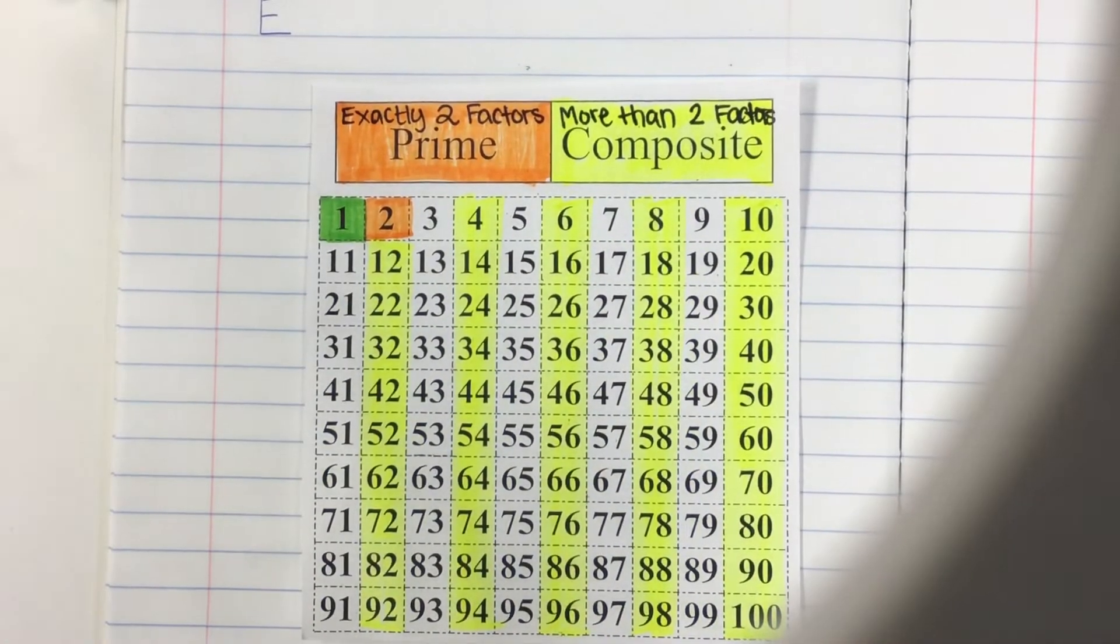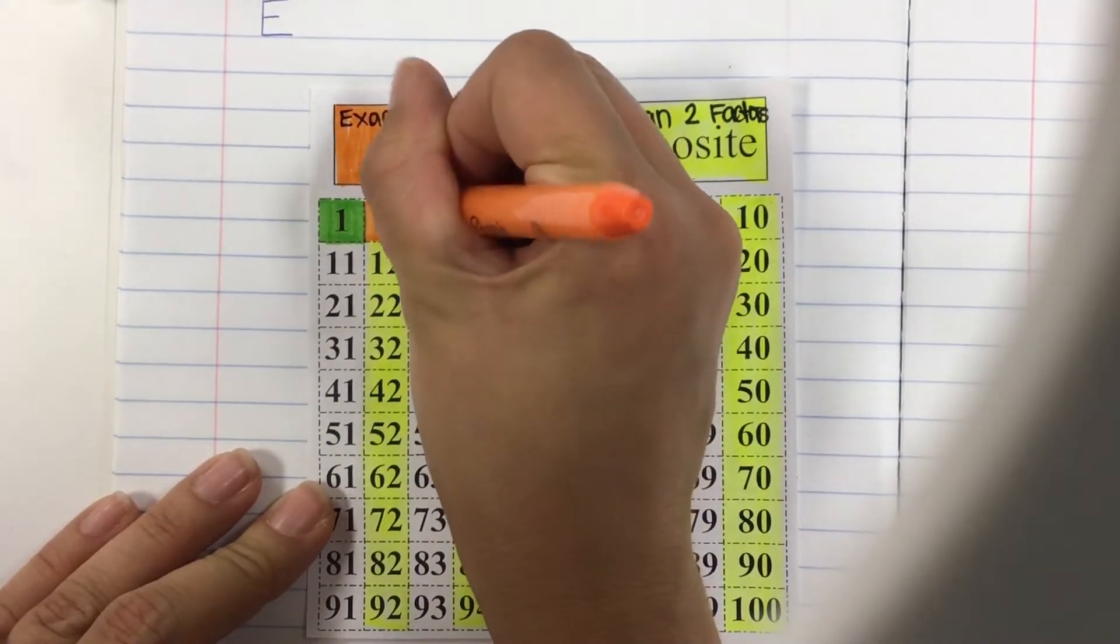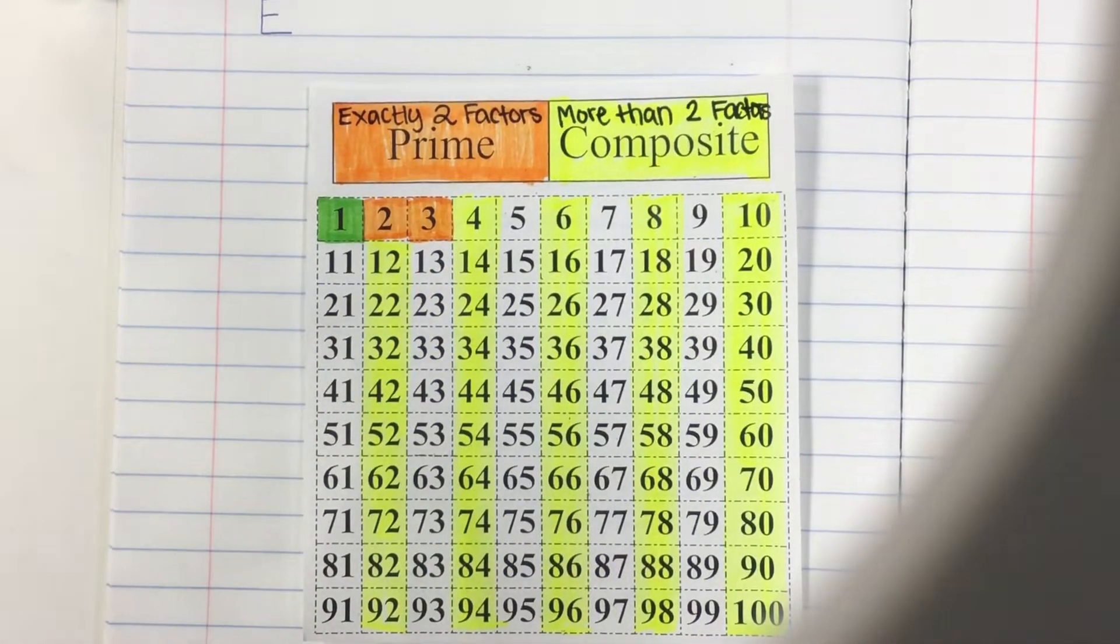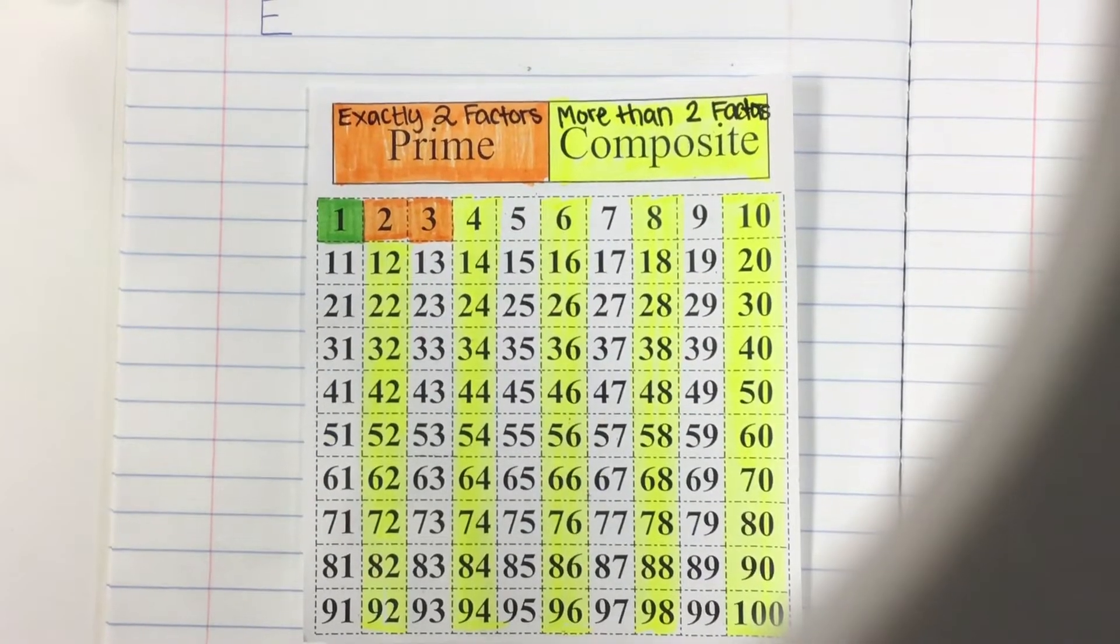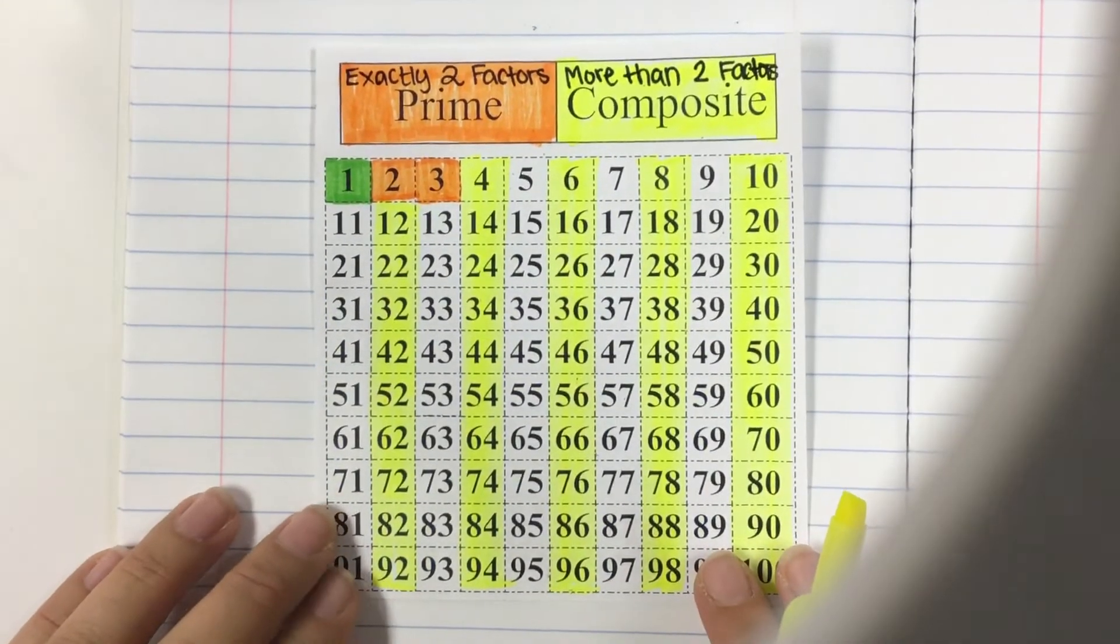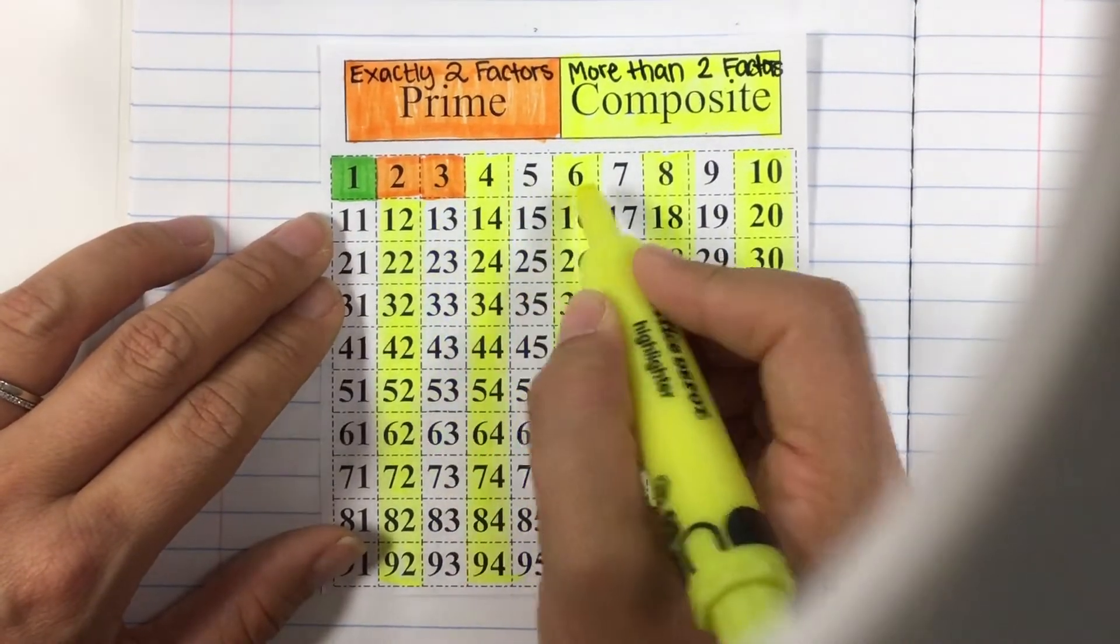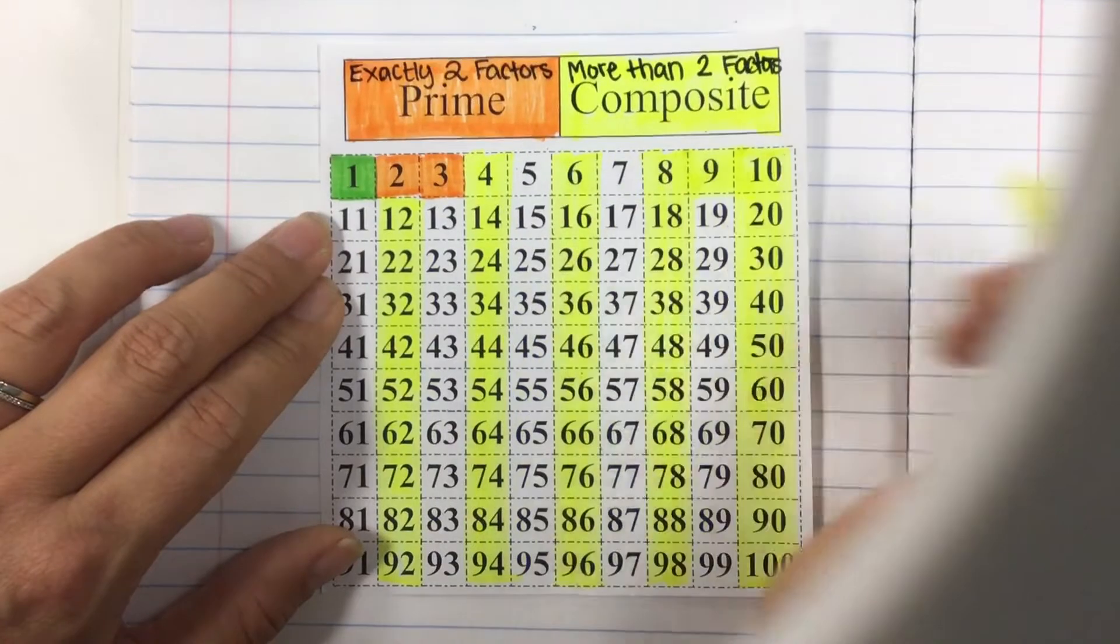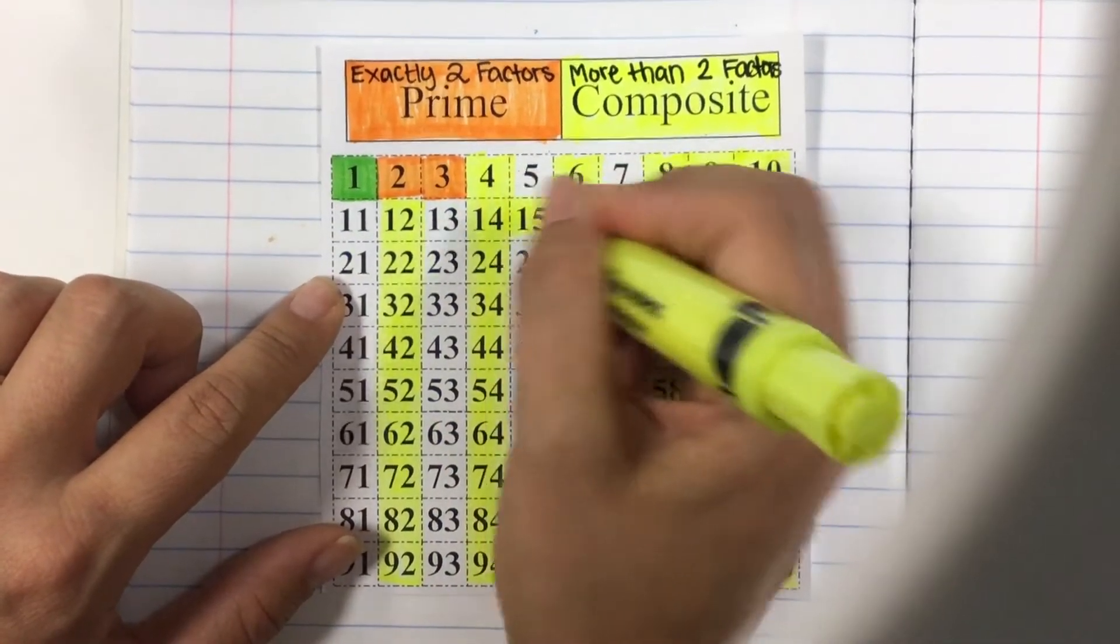So that means the next number is also prime, 3. Go ahead and grab your prime color and highlight 3. Then that means we need to highlight in our composite color the numbers that are multiples of 3. So we can really just count by 3's if you wanted to. 9 is not highlighted yet so we need to go ahead and highlight 9, then 15, then 18, 21.